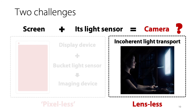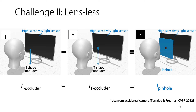We have shown image privacy in both specular and touching scenarios. You may have wondered what if there is no such one-to-one mapping. This is exactly the lensless challenge. Because there is no lens between the scene and the virtual sensor, the sensor would see a highly blurry image of the screen.